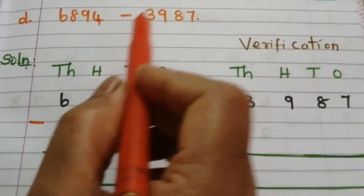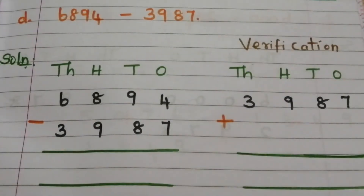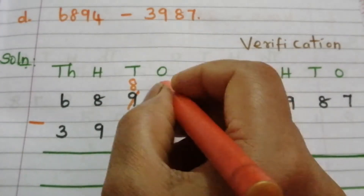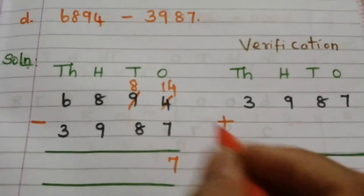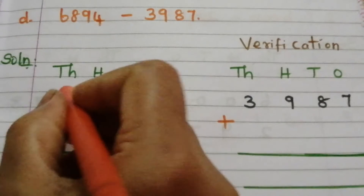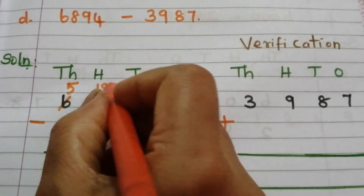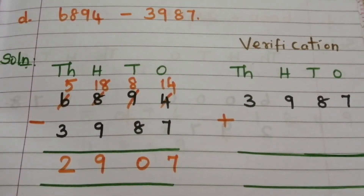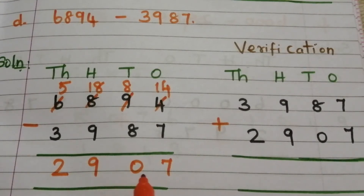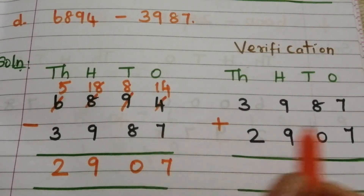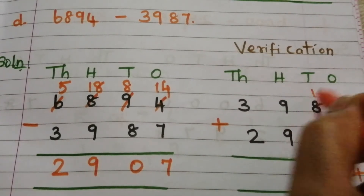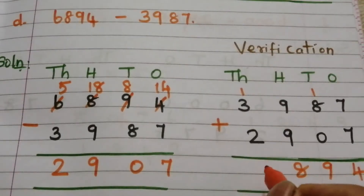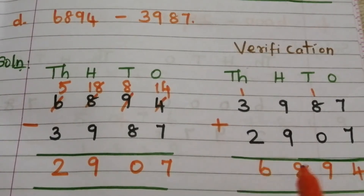Problem D: 6894 minus 3987. Start from ones place — borrow from 9, so 9 becomes 8 and 4 becomes 14. 14 minus 7 is 7. 8 minus 8 is 0. Borrow from here: 5, and this 8 becomes 18. 18 minus 9 is 9. 5 minus 3 is 2. The answer is 2907. For checking, add 2907 to the subtrahend: 7 plus 7 is 14 — write 4, carry 1. 9 plus 9 is 18 — write 8, carry 1. 3 plus 1 is 4, plus 2 is 6.